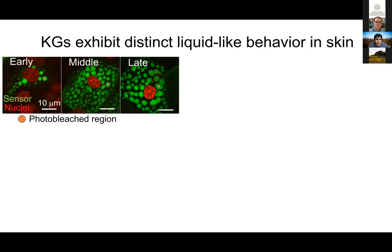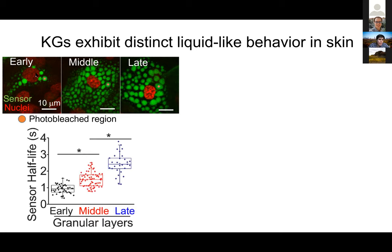These cells, as they mature from the early granule layer to the late, change morphology and acquire more and more granules. We did photobleaching experiments at different layers: at the early granule layer, the sensor reveals very liquid-like dynamics. As cells move towards the middle and particularly at the late stage, the relative viscosity keeps increasing, as revealed by a lengthening of the FRAP recovery half-life. Intriguingly, comparing our sensor behavior in skin in the mouse versus our in vitro cell culture experiments, the same sensor displays very different dynamics — somehow in the skin the granules exhibit a relative viscosity that is different.